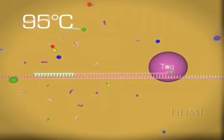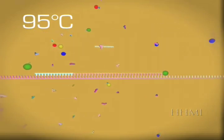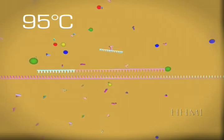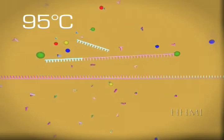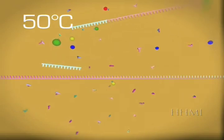The temperature is then raised again to 95 degrees Celsius and the segment that had just been made separates from the plasmid DNA. The temperature is then lowered to 50 degrees Celsius and a new primer settles on the plasmid DNA and the cycle repeats.